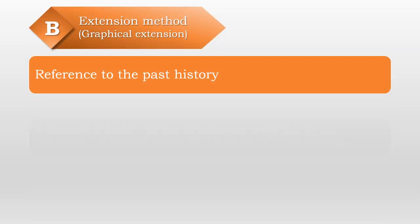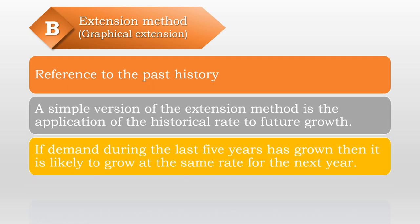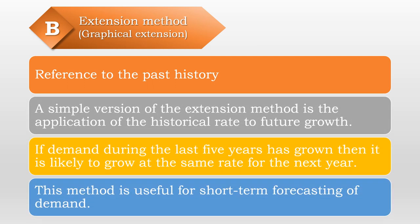The extension method is based on referencing past history. A simple version applies the historical growth rate to future projections. For example, if demand during the last five years has grown at an average rate of 10%, it may be reasonable to estimate that demand will grow at the same rate for the next year. This method is useful for short-term forecasting of demand.